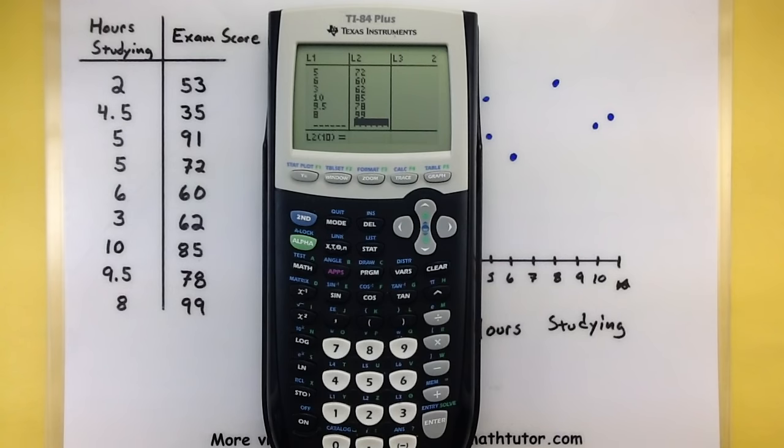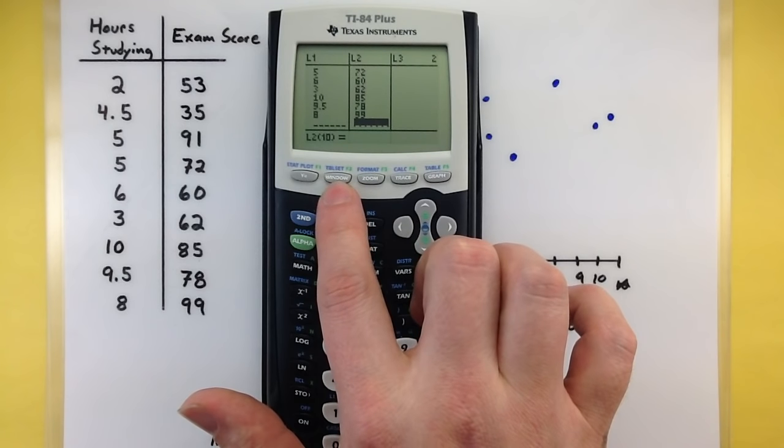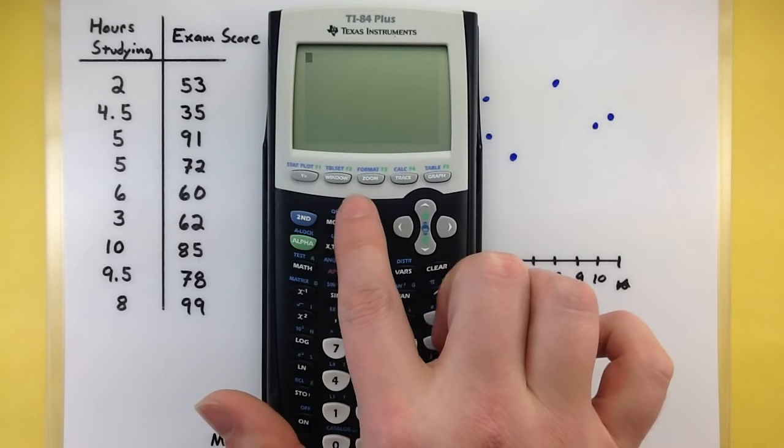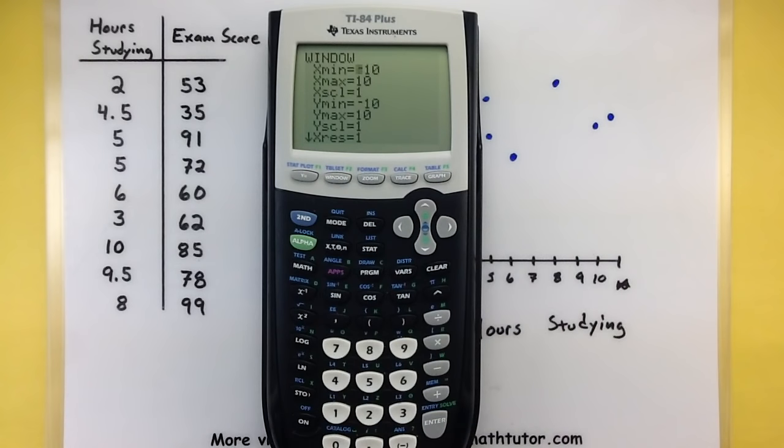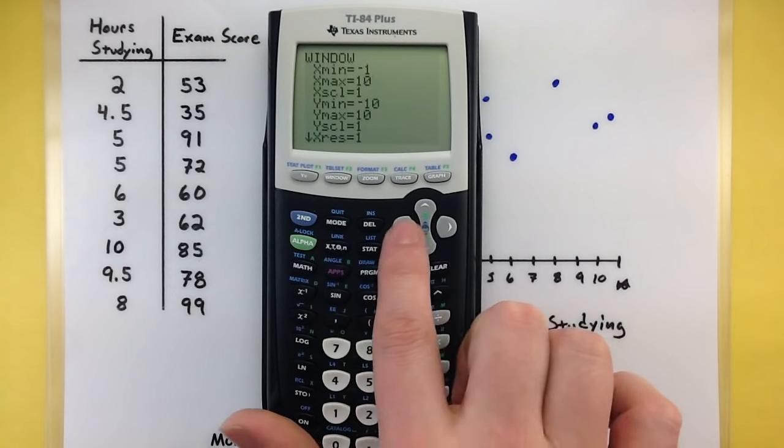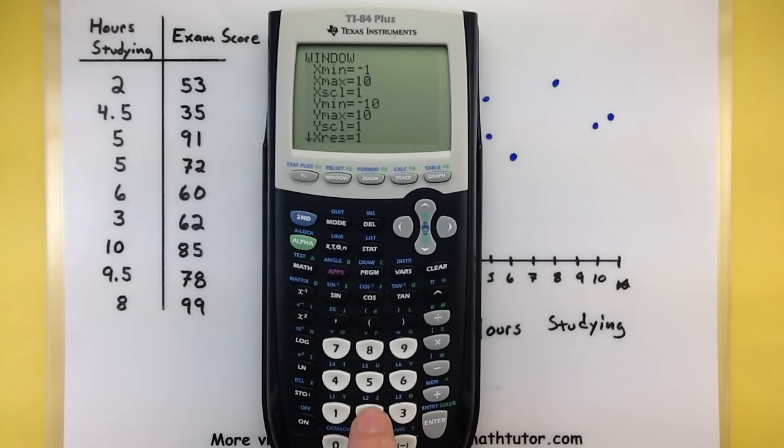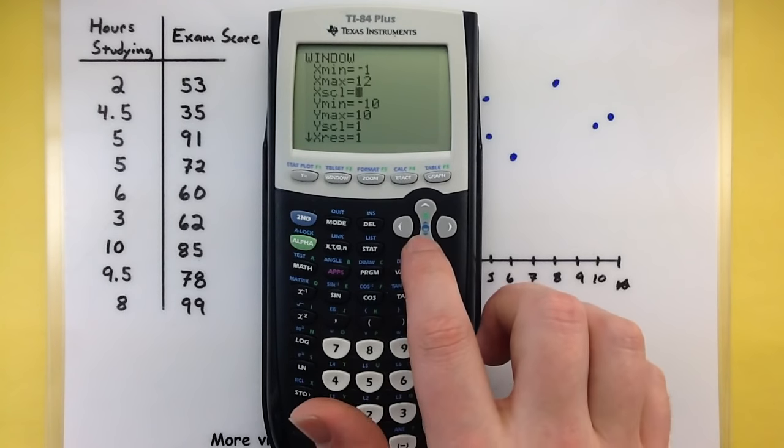Now, we need to set up our window so that it properly displays all of this data. Go to second, quit, and now go up here where it says window. We want to make sure that the x values for our hours studying encompass all of our data points. So, I'm going to select somewhere between negative 1 up to, let's say, 10. No, let's do a little bit farther since I already have a data point of 10. I like to choose something a little bit smaller and a little bit larger than the actual values we have, just so it definitely has all of them on there.